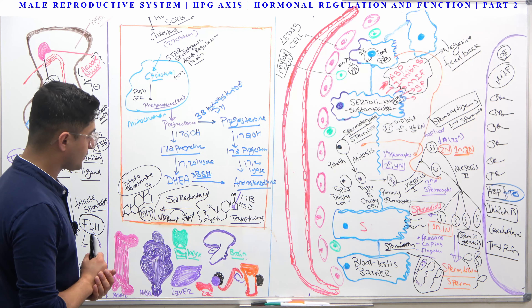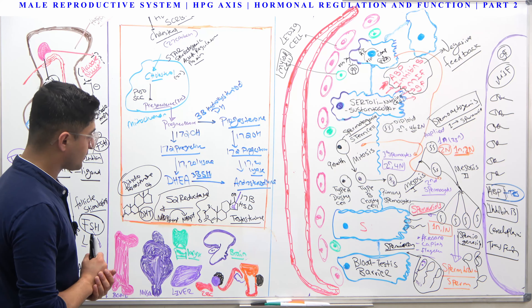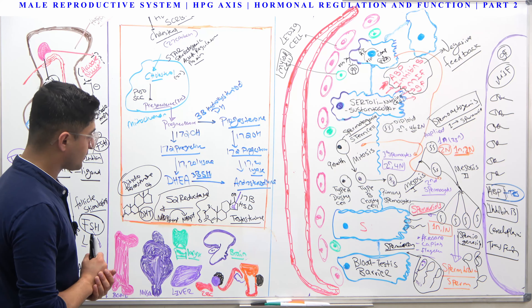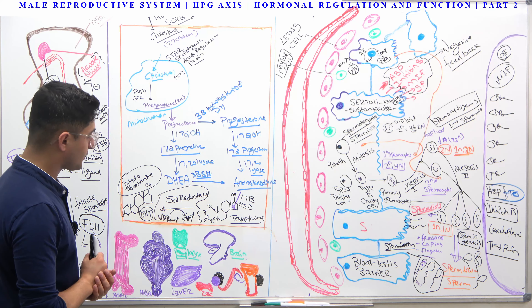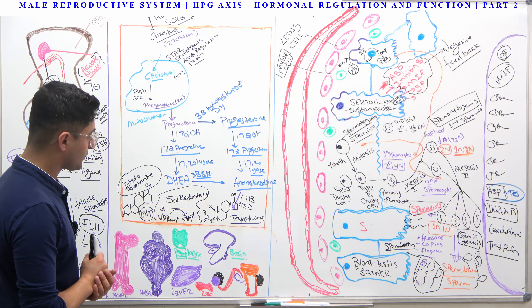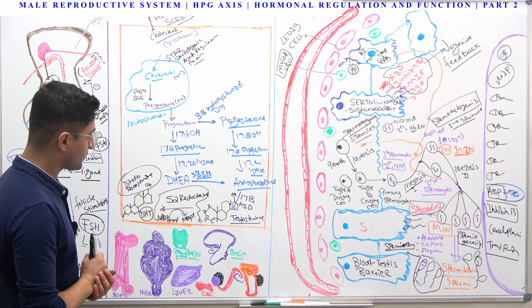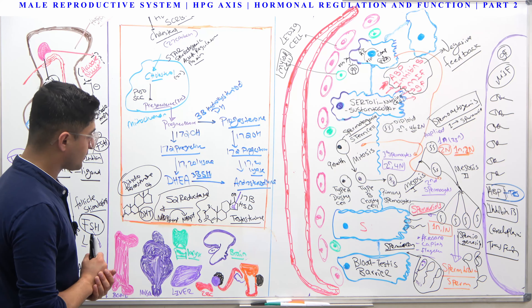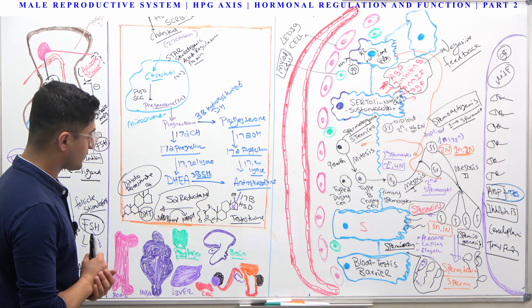The process by which the testes descend from the abdomen downward into the scrotum — through the inguinal canal — is also dependent on the level of testosterone. If there is a testosterone deficiency, there will be failure of the testes descending downward. The condition resulting from failure of the testes to descend is called cryptorchidism.